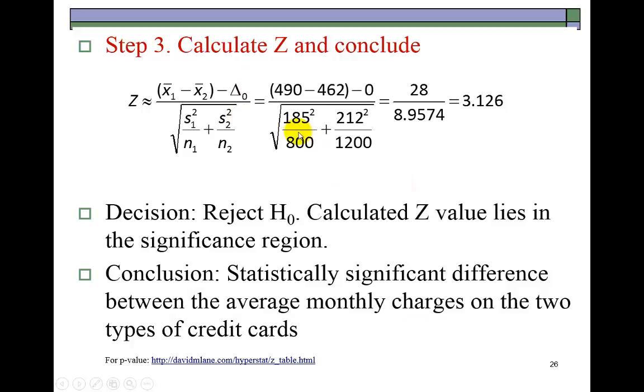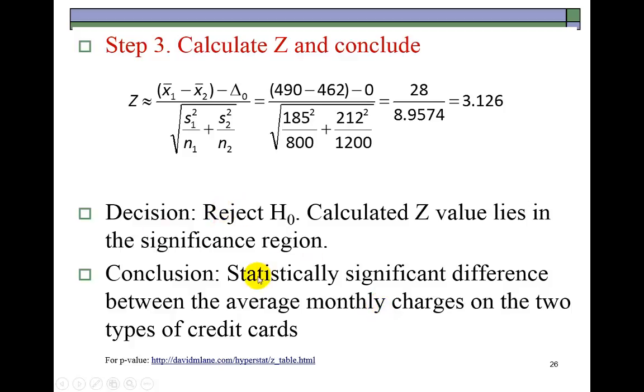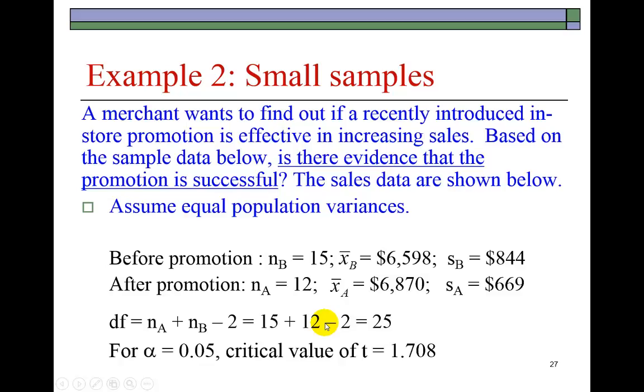Now we calculate Z, and we find 3.126 to be the calculated statistic, which lies in the significance region. So we reject the null hypothesis and conclude that there is a statistically significant difference between the average monthly charges on the two types of credit cards examined in the study.